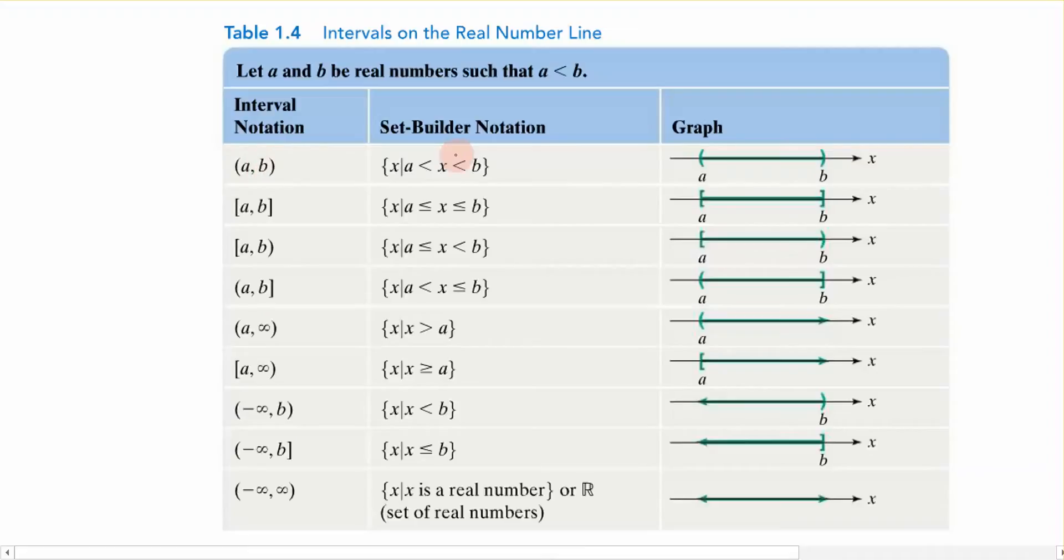Now what that says to us in set builder notation is that my variable x, the solution for my variable x, is x has to be between a and b. It cannot include a and b because we can see the inequality symbol right here is not inclusive.